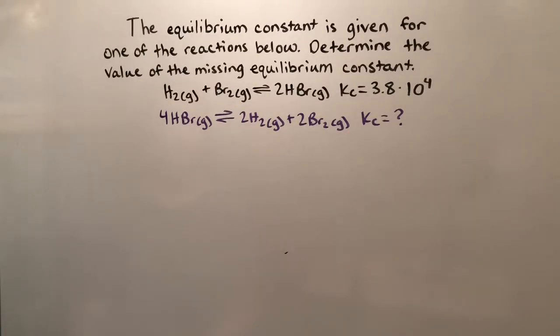When we're doing these problems, there are three main rules that we want to follow to find our Kc. The first rule is that if we take our original equation and multiply it by an integer, we're going to need to take its Kc value and raise it to that integer to find our final Kc value.